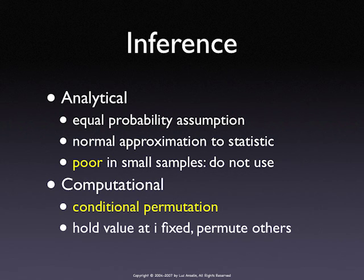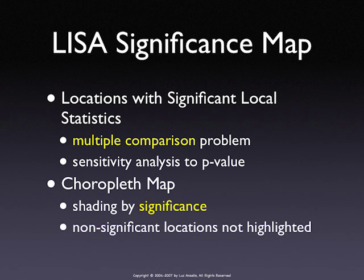What do you do with this? Two maps. One map is what I call a significance map — essentially a map of colors and blanks. The blanks are the locations that do not have a significant local statistic, and the colored ones are the locations that do. Do not make a map of the local statistics themselves because the ones that are not significant are zero for all practical purposes — they're spatially random. The darker the color, the more significant. All the white spots in North Carolina counties are non-significant local statistics.